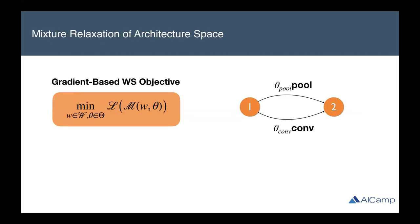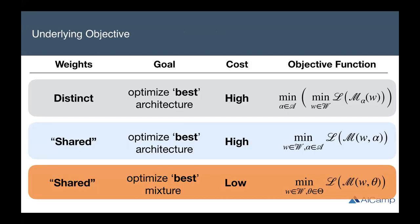A common relaxation used for NAS is what I call a mixture relaxation of the architecture space. Instead of selecting a single operation on an edge, we take a weighted combination of the operations on an edge — we calculate the representation at node two as the weighted sum of both the pooling and convolutional operations applied to the input representation. Under this view where we've applied a relaxation, the computational cost is much lower because we can use gradients. But we've also shifted the problem to learning the best mixture instead of learning the best architecture.